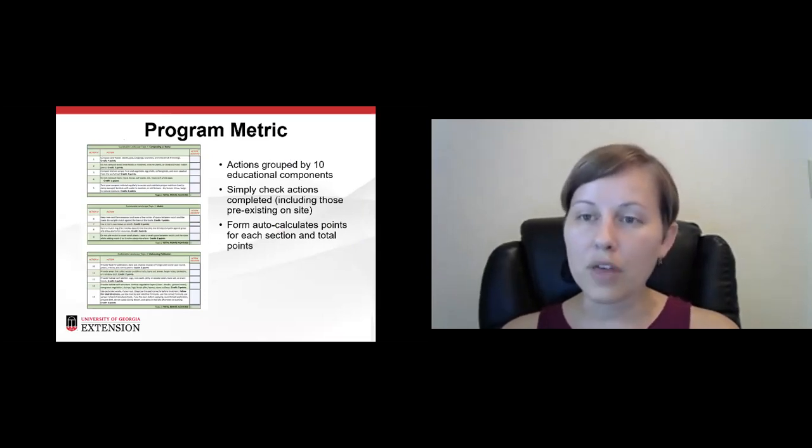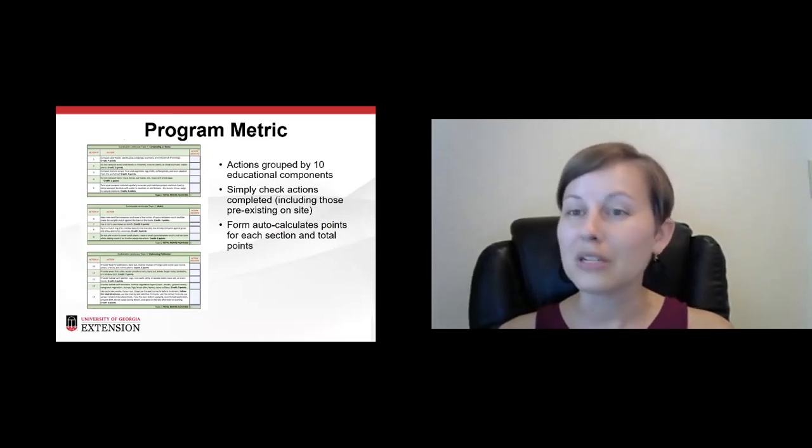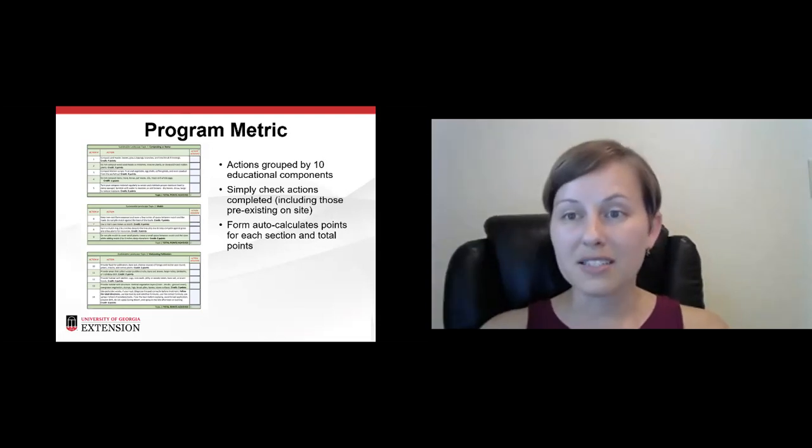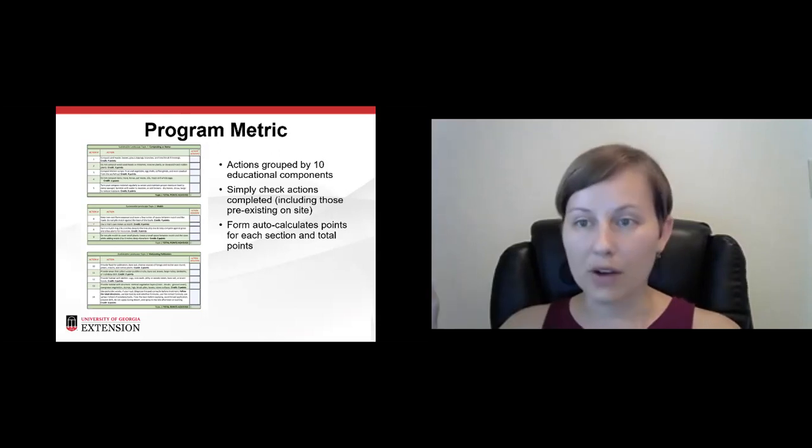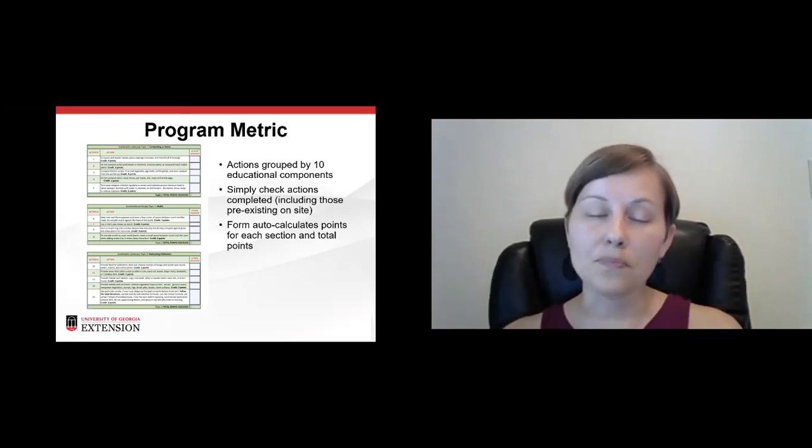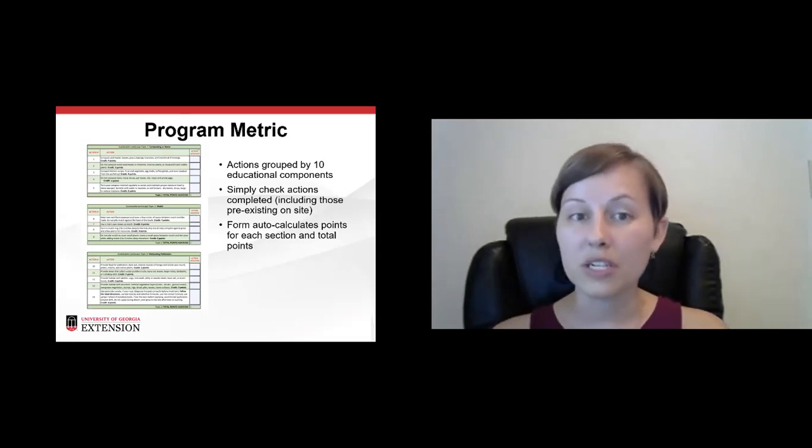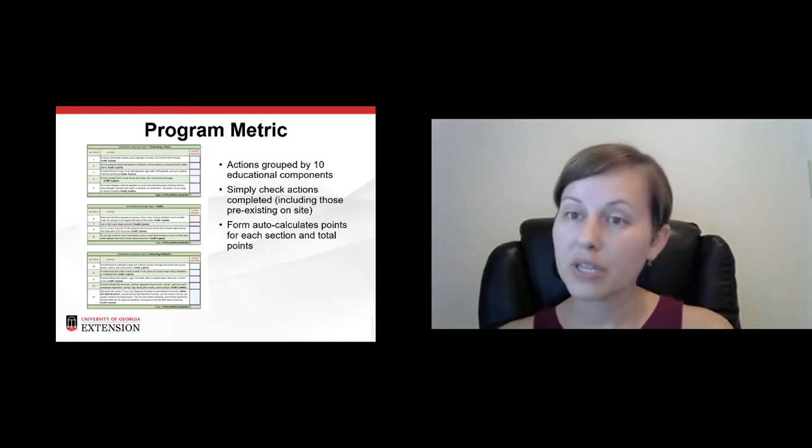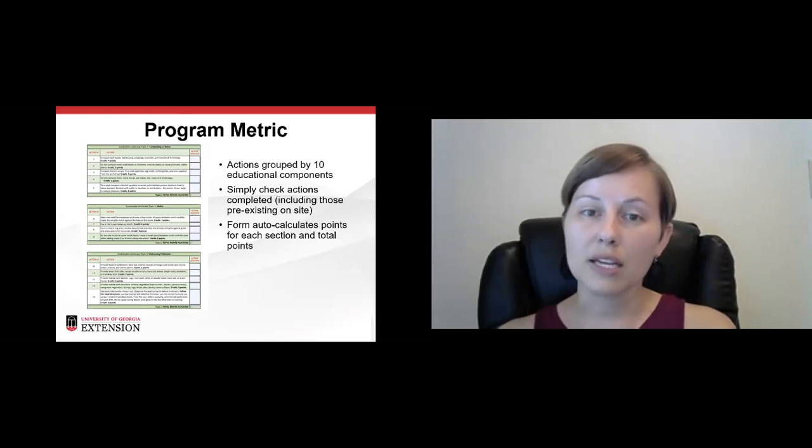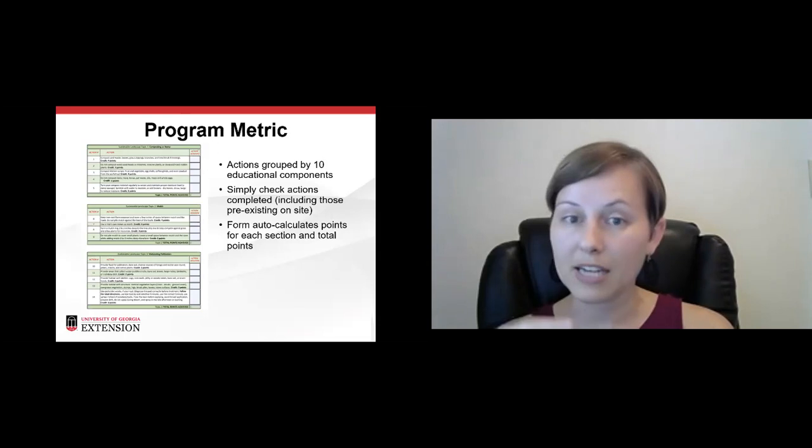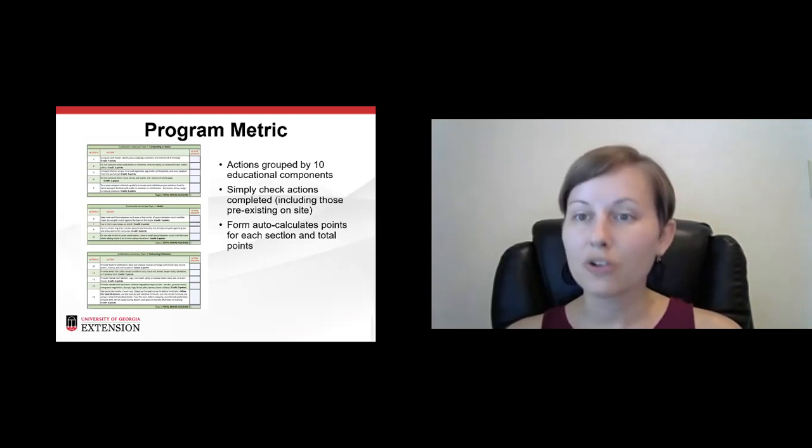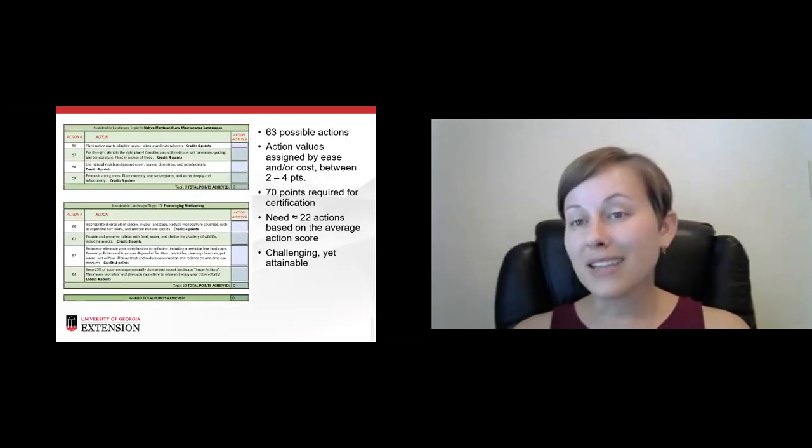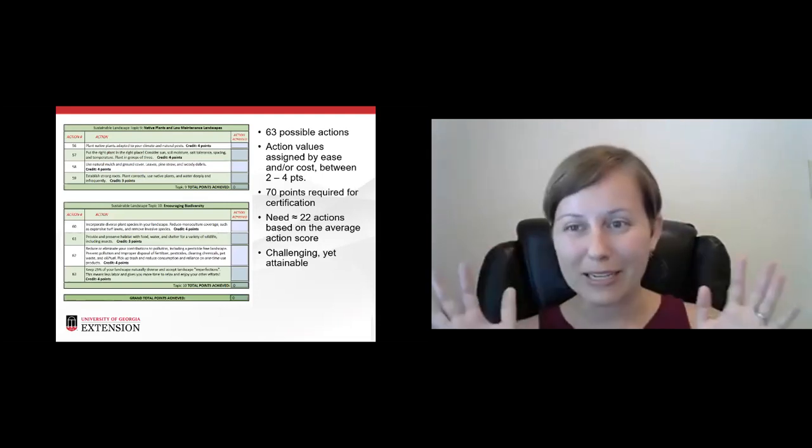So this is just a glance at the program metric. So we have, as I mentioned, there's 10 educational components and the actions on the metric are grouped by those 10 educational components. So we try to make it really straightforward. We know that not everybody has the same ability, same amount of technical skill. So it's really straightforward. You click on it. All you do is you click the box next to the action if you're doing it and it puts a check mark and it auto calculates. So it calculates for each section, like this top one up here says composting at home. So those are the actions for credit under composting. So each one of those that you check has points and it tells you how many points credited to it.